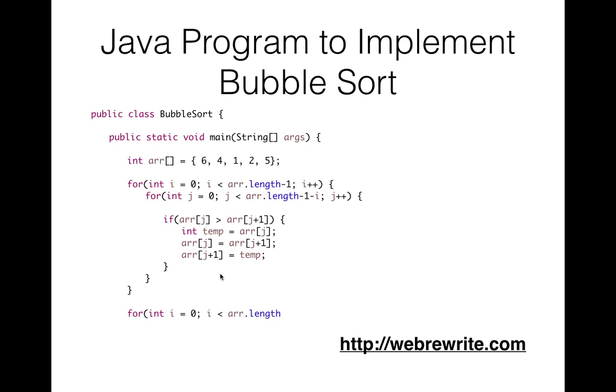After the completion of the loop we get the sorted array, and at last we print the sorted result. In this way bubble sort works. I'll mention the code link in the description box. This is our first sorting algorithm in the series of sorting algorithms.